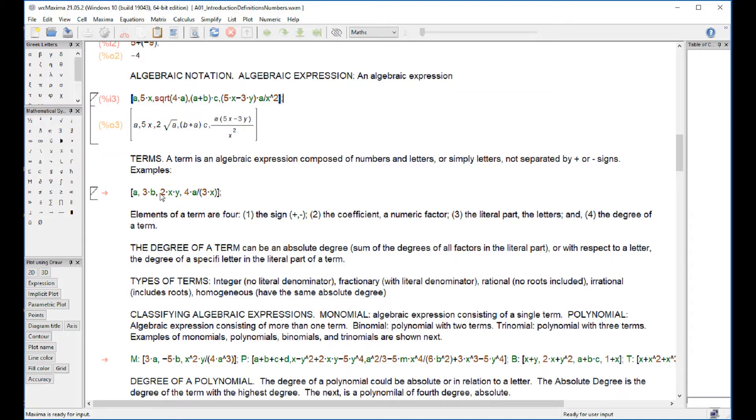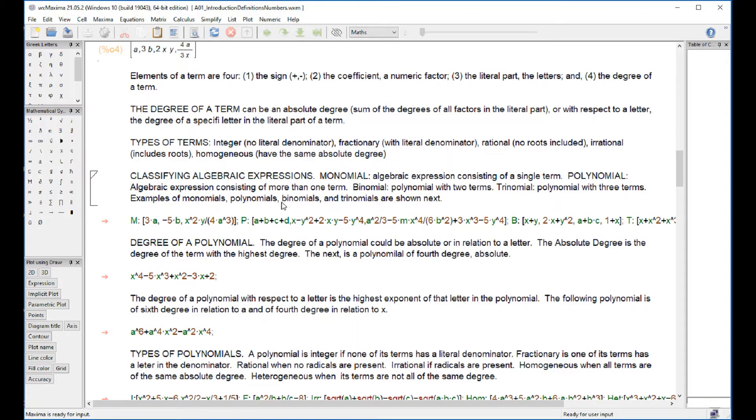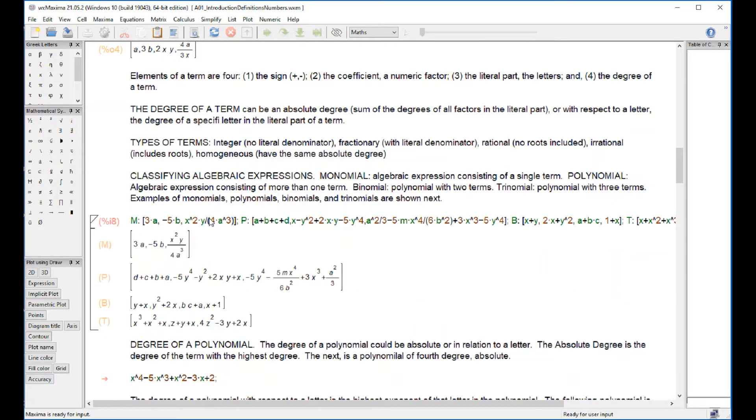These are all algebraic expressions. When you have a single algebraic expression that is not added or subtracted you call them terms. Terms have a degree - for example b is raised to the first power. When you have a single term expression that's called a monomial. If you get a summation of several expressions you get a polynomial. If that polynomial has only two terms it's called a binomial, three terms called a trinomial. Here are examples of monomials, polynomials, binomials, and trinomials.